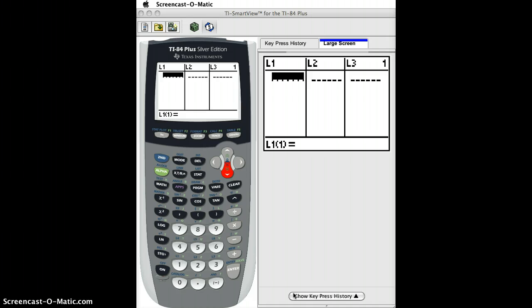The first step is to enter your explanatory variables in list L1 and your response in list L2. I'm going to do the example we had been looking at of the fat gain versus non-exercise activity change.